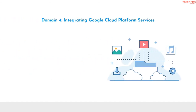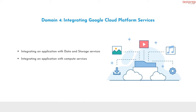Domain 4 is integrating Google Cloud Platform services. It contains three subtopics: integrating an application with data and storage services; integrating an application with compute services; and integrating Google Cloud APIs with applications.